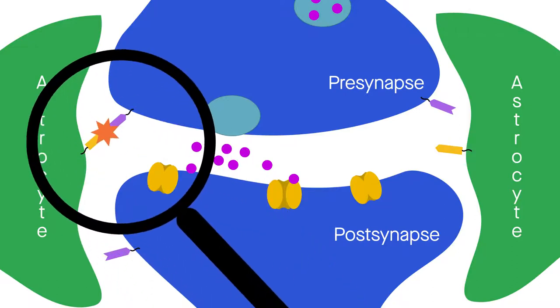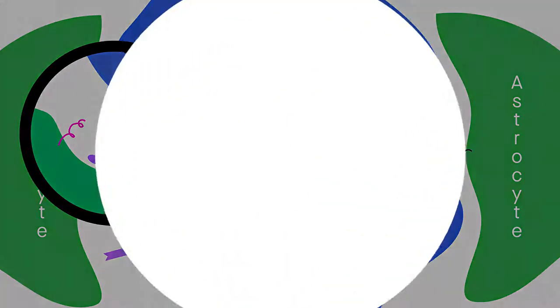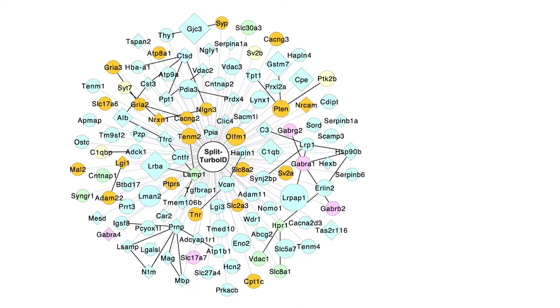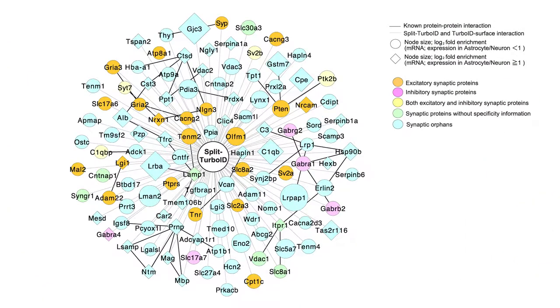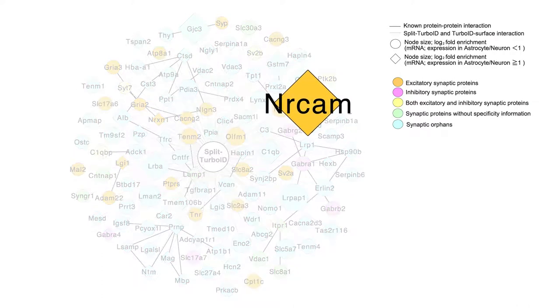The proteins caught up in these bursts of enzyme activity can then be analyzed and their individual roles understood. In mice, split-turbo-ID revealed more than 170 astrocytic proteins that participate in synaptic processes, including neuronal cell adhesion molecule, or NR-CAM.